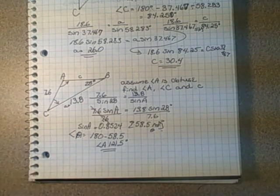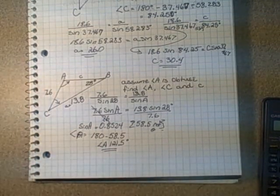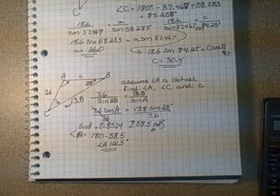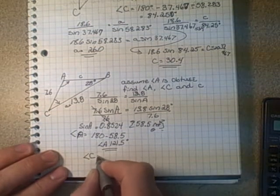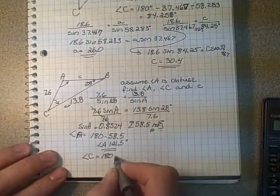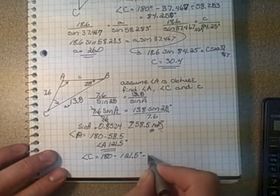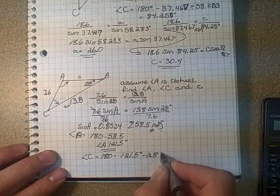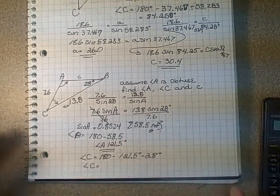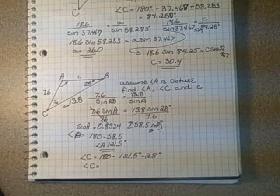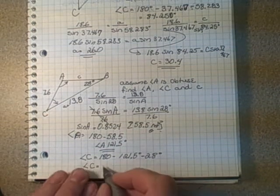Now that we have angle A and we know angle B, we can calculate angle C by subtracting everything from 180 degrees. So angle C equals 180 minus 121.5 degrees for angle A, minus 28 degrees for angle B. That gives us angle C equals 30.5 degrees.